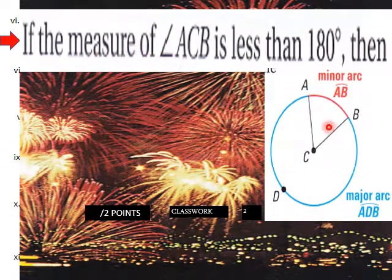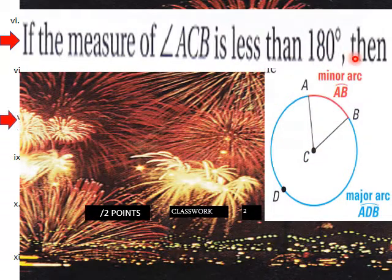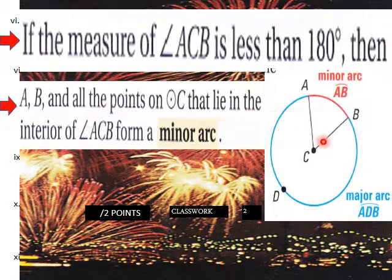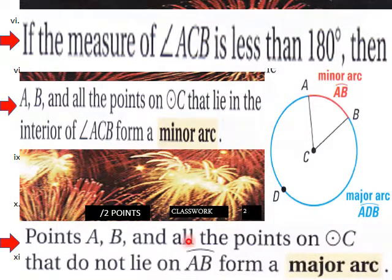If the measure of angle ACB is less than 180 degrees, then points A and B and all points on circle C that lie in the interior of angle ACB form a minor arc. A major arc is what's left over — points A and B and all points on circle C that do not lie on arc AB form a major arc.